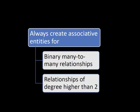Whenever you have a many-to-many relationship, always create a new associative entity. In the case of relationships of degree higher than two — namely ternary relationships — you are always going to create an associative entity as well. In fact there is no notation for ternary relationships in our course; they are always converted to associative entities.